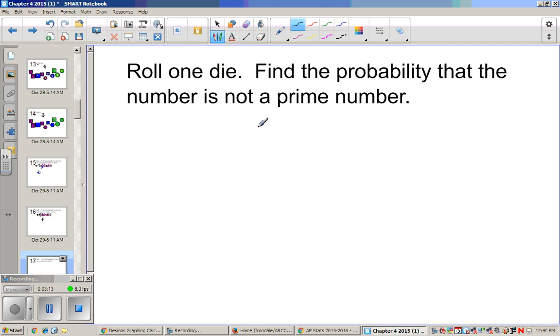Now to find the probability that it is not a prime number, so now I fill this out. Prime numbers are 2, 3, and 5. So if it's not, it's 1, 2, 3 out of 6, which we can reduce to 1 half.